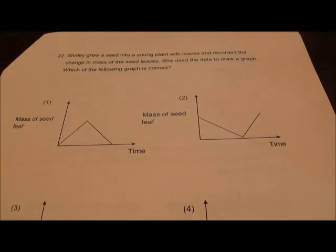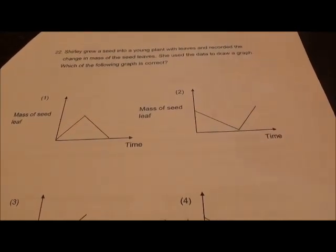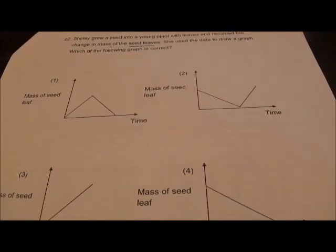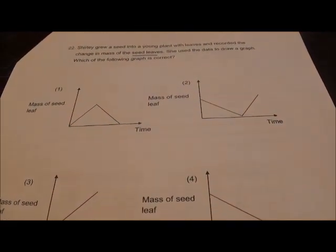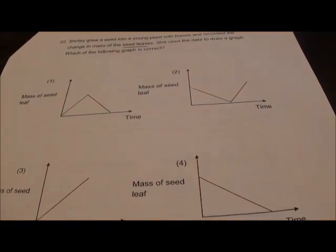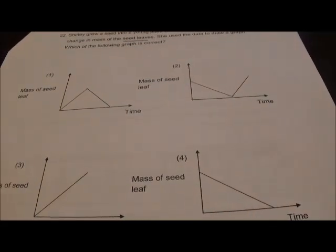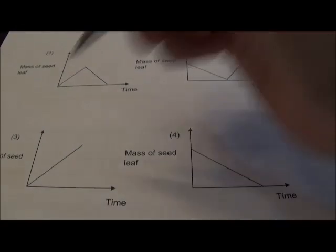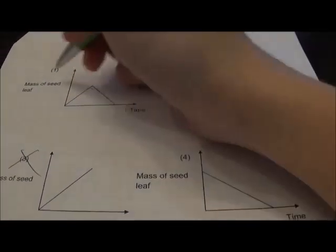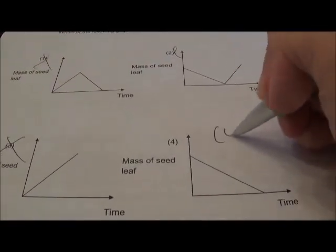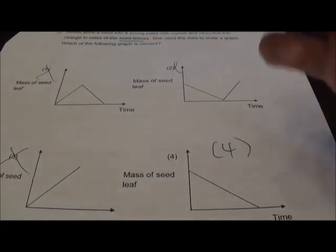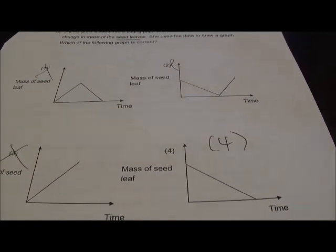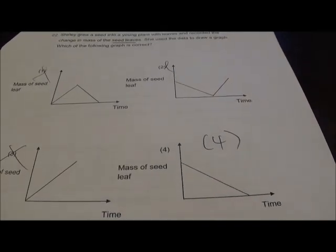Question 22: Shirley grew a seed into a young plant with leaves and recorded the change in mass of the seed leaf. As the plant grows, the mass of the seed leaf will decrease because the plant keeps using up the food stored inside it. It cannot be 3 — cannot go up and down. The only logical answer is 4, whereby the seed leaves slowly decrease in size because the seedling uses up the food stored inside them.